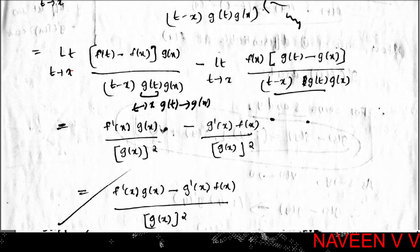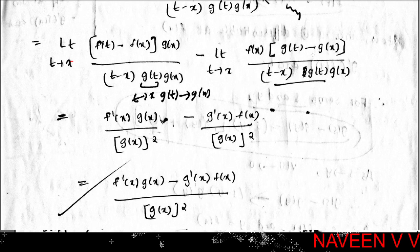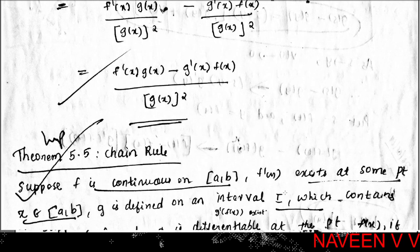Since limit t→x of [f(t) - f(x)] / (t - x) = f'(x), limit t→x of [g(t) - g(x)] / (t - x) = g'(x), limit t→x of g(t) = g(x), and f(x) is constant, this simplifies to: f'(x)·g(x) / g(x)² - g'(x)·f(x) / g(x)², which equals [f'(x)·g(x) - g'(x)·f(x)] / g(x)².